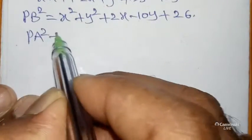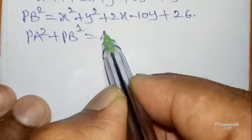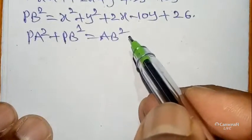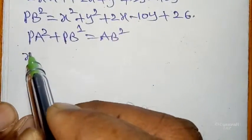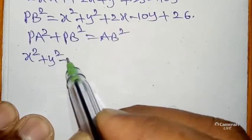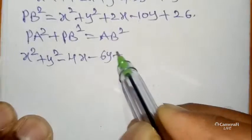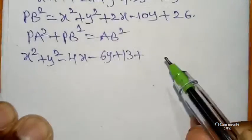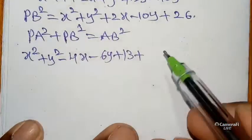According to our equation: PA² + PB² = AB². Substituting: (x² + y² − 4x − 6y + 13) + (x² + y² + 2x − 10y + 26) = 13.